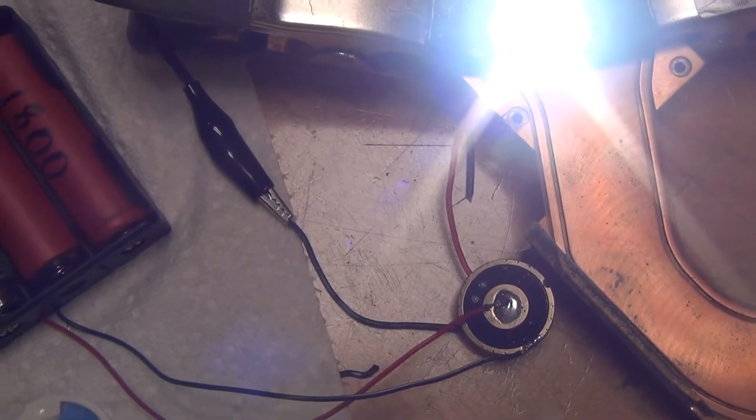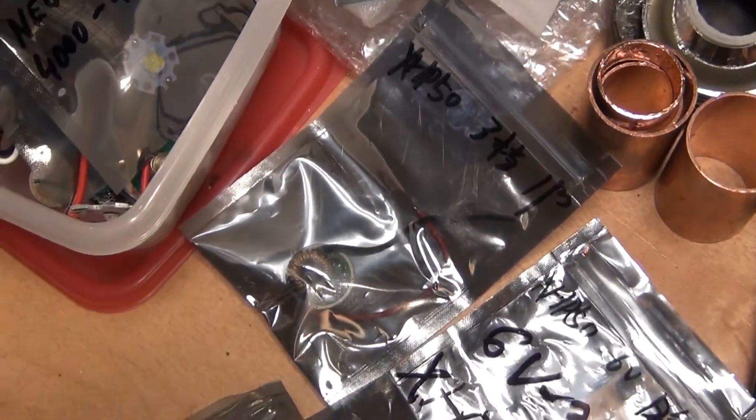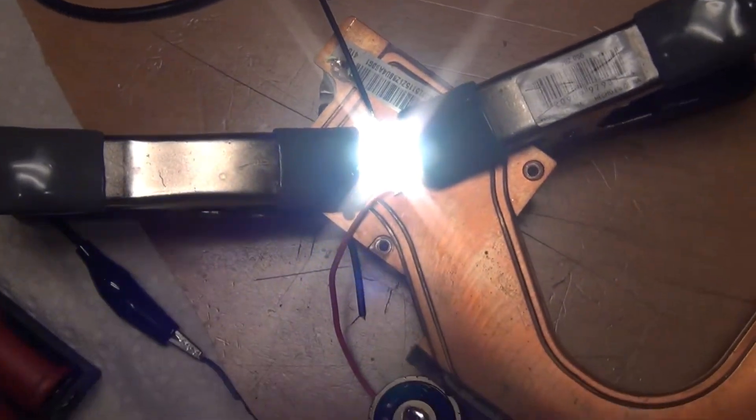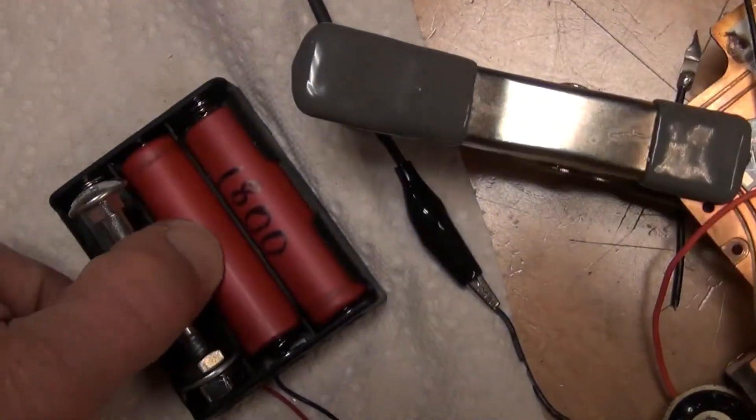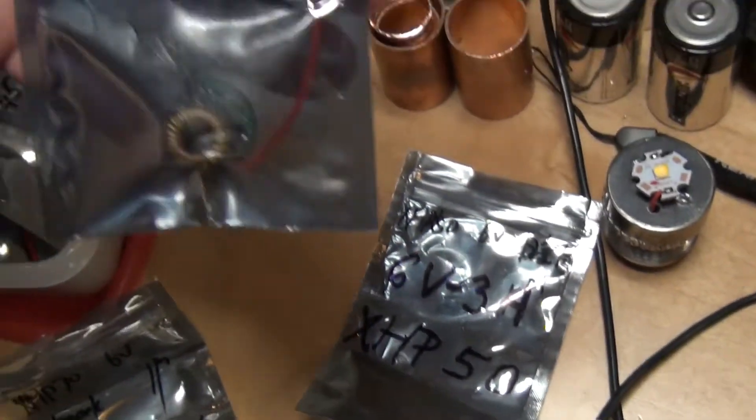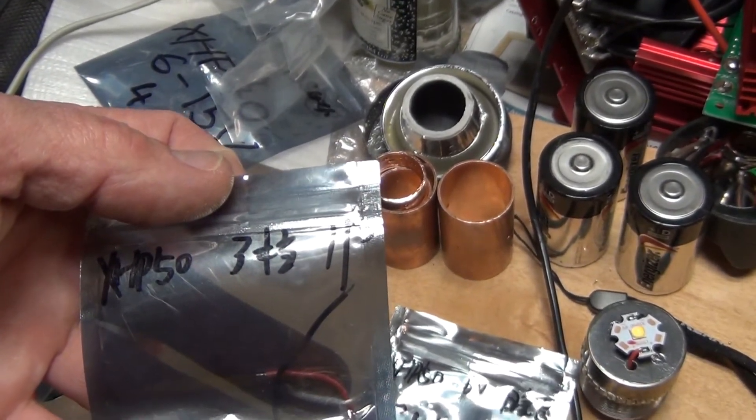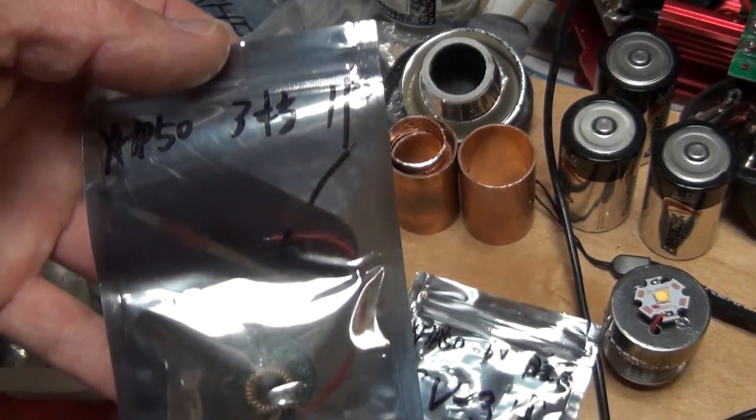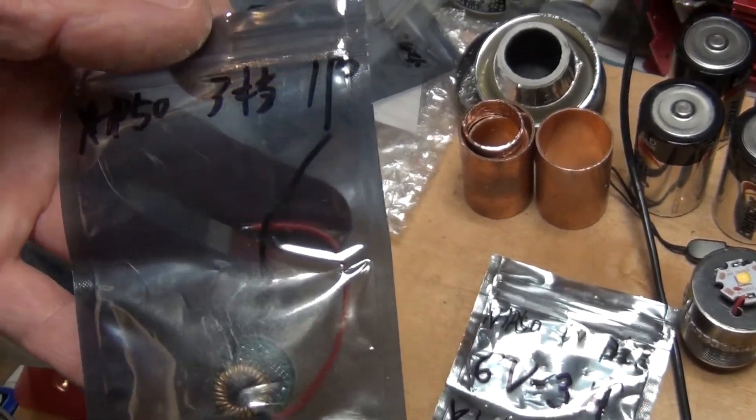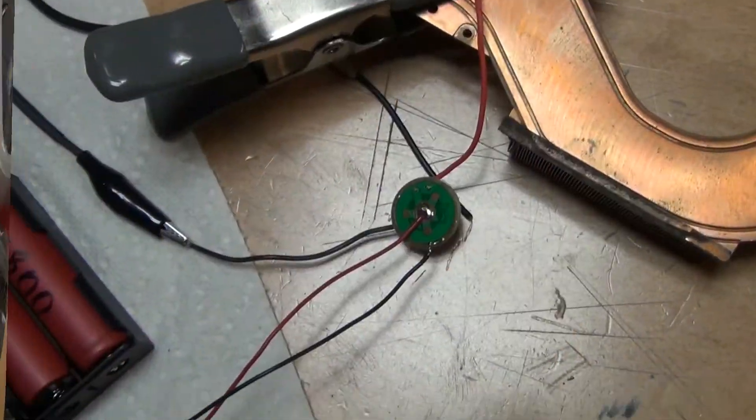I'm gonna take it out, I'm gonna test another one, I'm gonna test XHP50 driver, which they state, it supplies, hold on, let me actually shut this light off, because it's killing my camera, and this is XHP50 driver, that I just recently purchased, and it should be supplying between 2 to 2.2 amps to XHP50 LED.